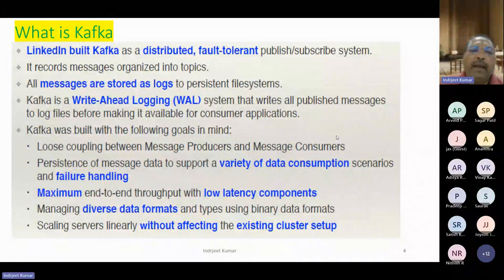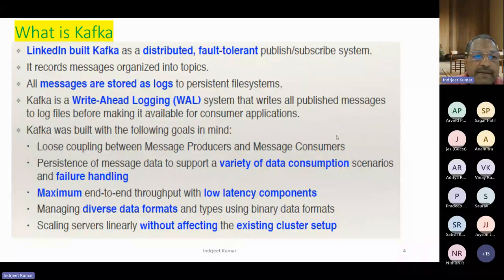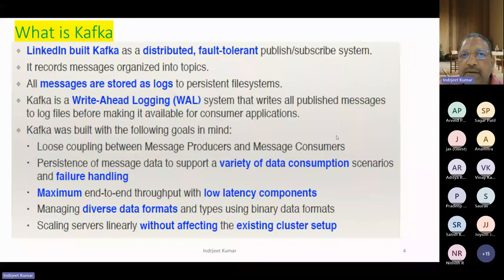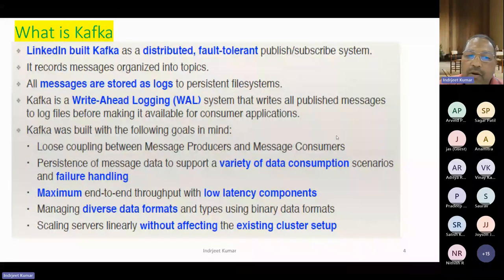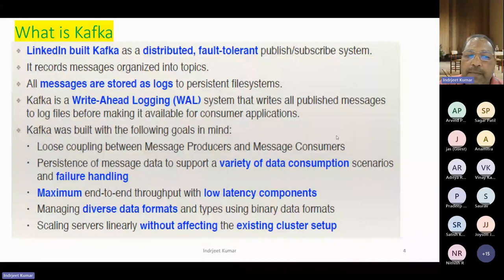What is Kafka? It is a distributed, fault-tolerant, publish-and-subscribe system. It records messages organized into topics. There was a concept of queue and topic. In a topic, there can be multiple producers and consumers. All messages are stored in the log. It is persistent — if we want to change the message, it cannot be changed. It is immutable, like a final variable in Java. And it is a write-ahead log that writes all published messages.